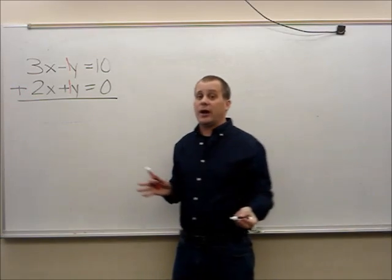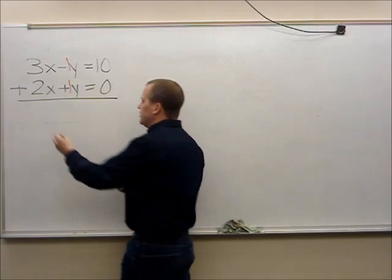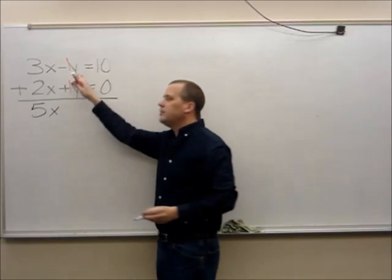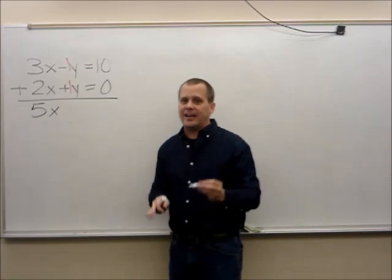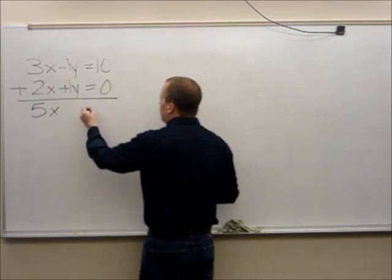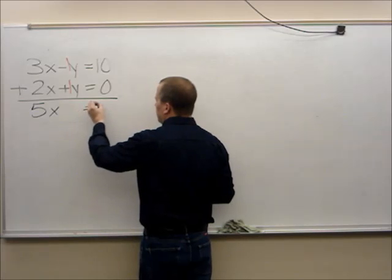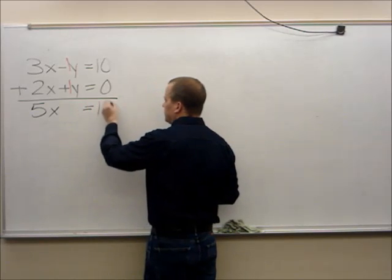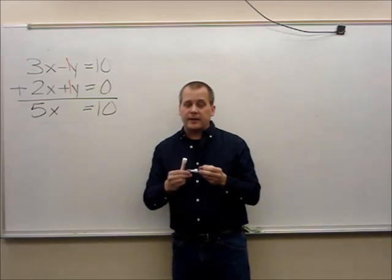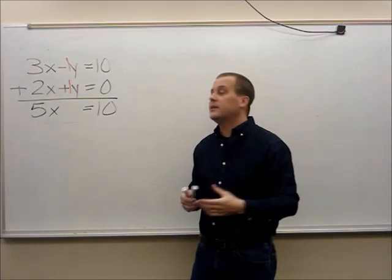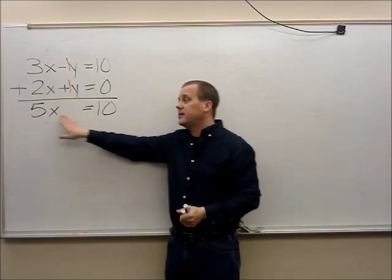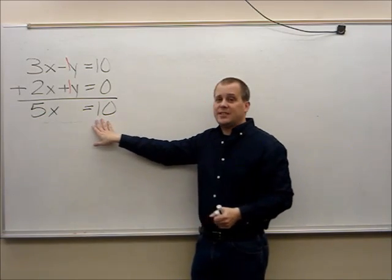What's 3x plus 2x? 3x plus 2x is 5x. 1y minus 1y is zero — they cancel out, they've been eliminated. What's 10 plus zero? 10. So the y's have eliminated and canceled out one another. I'm only left with 5x equals 10.